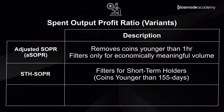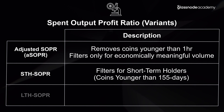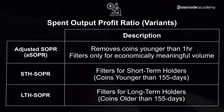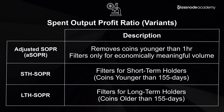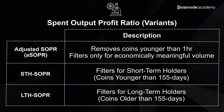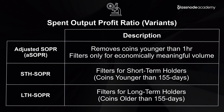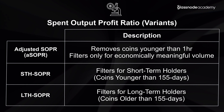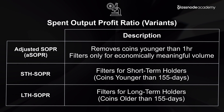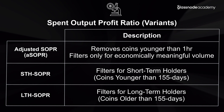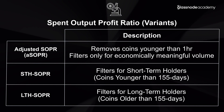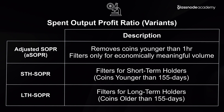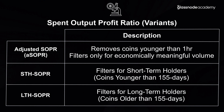The final variant is the long-term holder SOPR, which filters for coins that are older than 155 days. Once a coin is older than 155 days, it is statistically less likely to be spent on-chain. In general, this metric provides us a profit multiple being realized by these long-term investors.